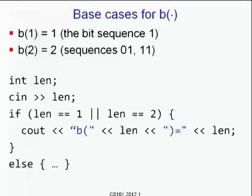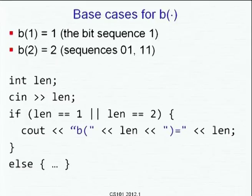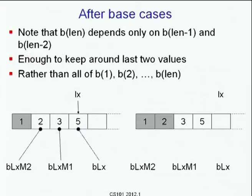The base case is b(1) equals 1, since the only bit of length 1 ending with 1 is just 1 itself. b(2) equals 2 because if it has to end with 1 the previous bit can be either 0 or 1. So b(1) equals 1 and b(2) equals 2. If len is 0 or 1 there is nothing to do. After the base cases, b(len) depends only on b(len-1) and b(len-2), so it is not necessary to keep the entire sequence — we can just remember the last two values.